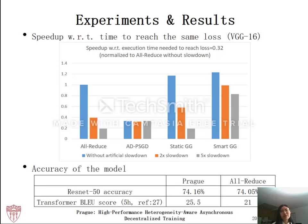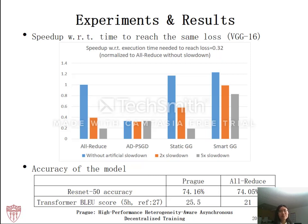Finally, we demonstrate that Prague can achieve similar accuracy compared to allreduce. When running ResNet-50 on ImageNet using 16 workers, Prague and allreduce achieved similar final accuracies. For the transformer model, we conducted a five-hour fixed-time experiment, and Prague achieved a higher BLEU score than allreduce within five hours. The reference BLEU score is 27.